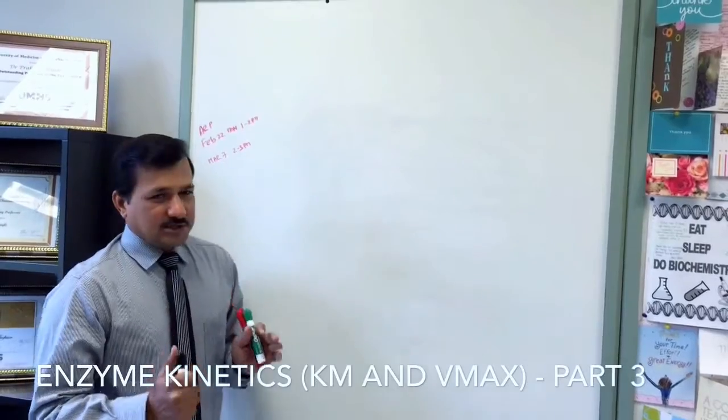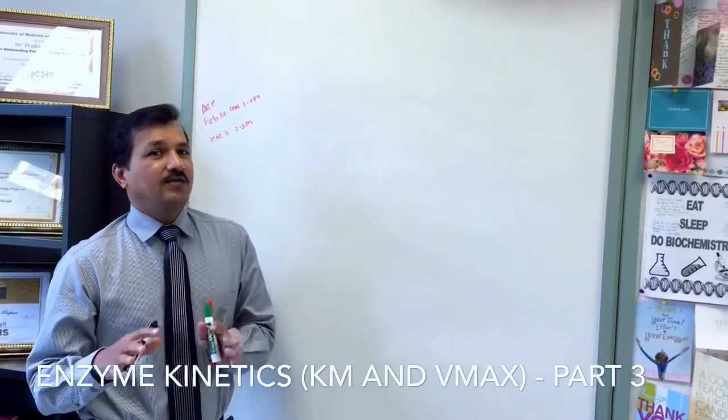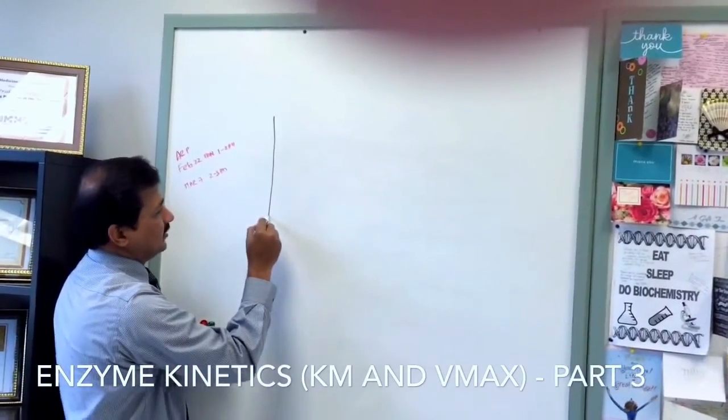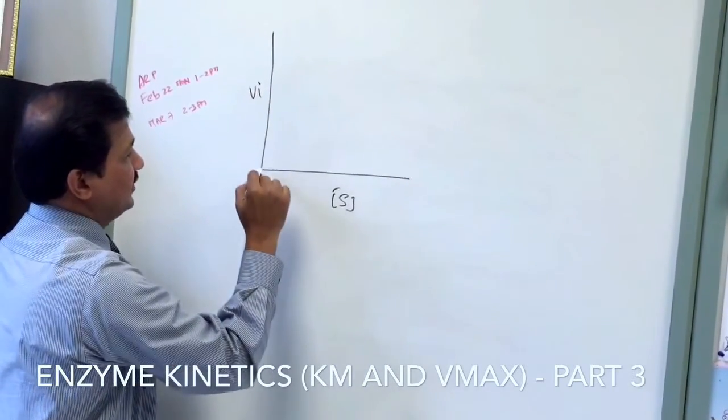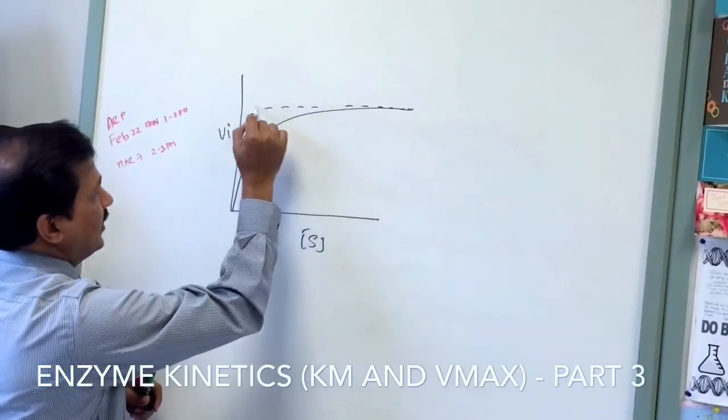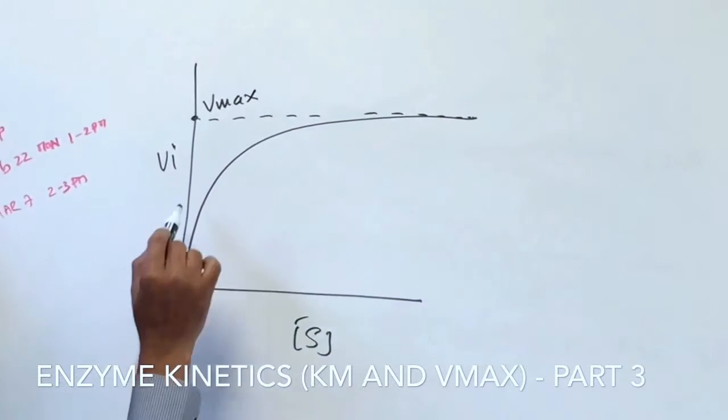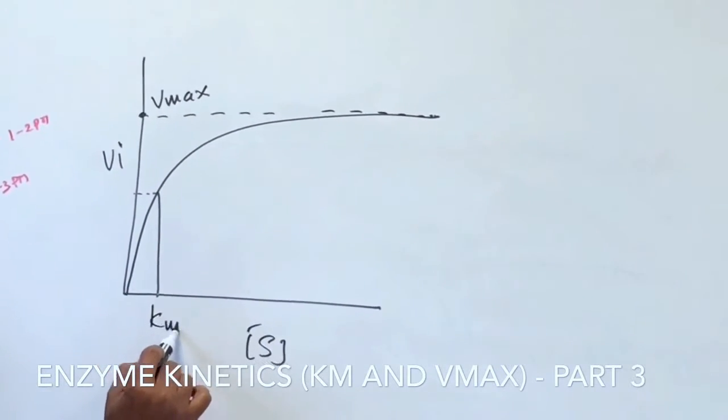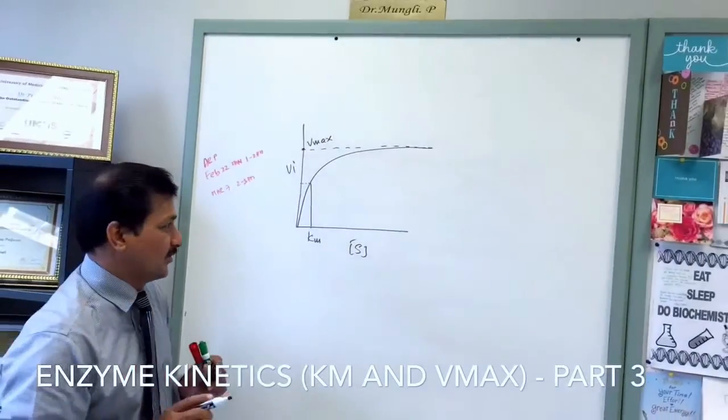Today I am going to explain the Michaelis-Menten plot and also the Lineweaver-Burk plot. The Michaelis-Menten plot has substrate concentration on the x-axis, initial velocity on the y-axis, and you get a saturation curve. This point here is Vmax, the maximum velocity of the reaction. Half of the Vmax gives you Km, which is the substrate concentration at which the enzyme reaches half the maximum velocity.